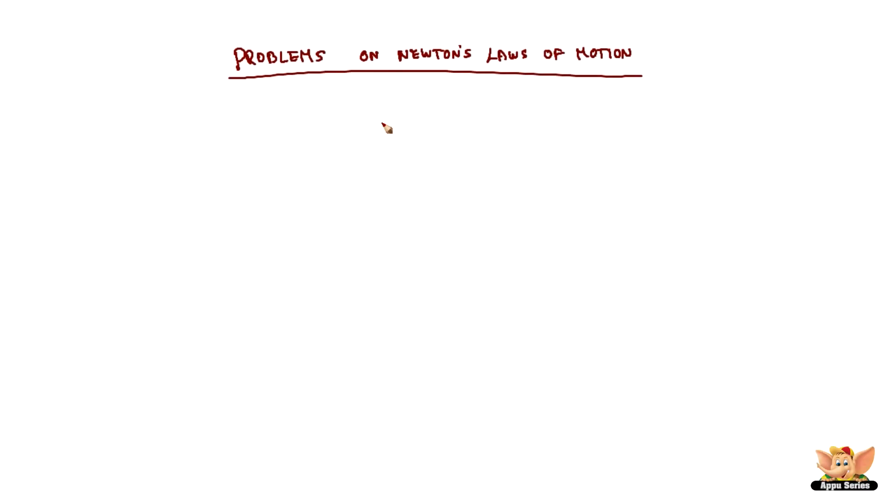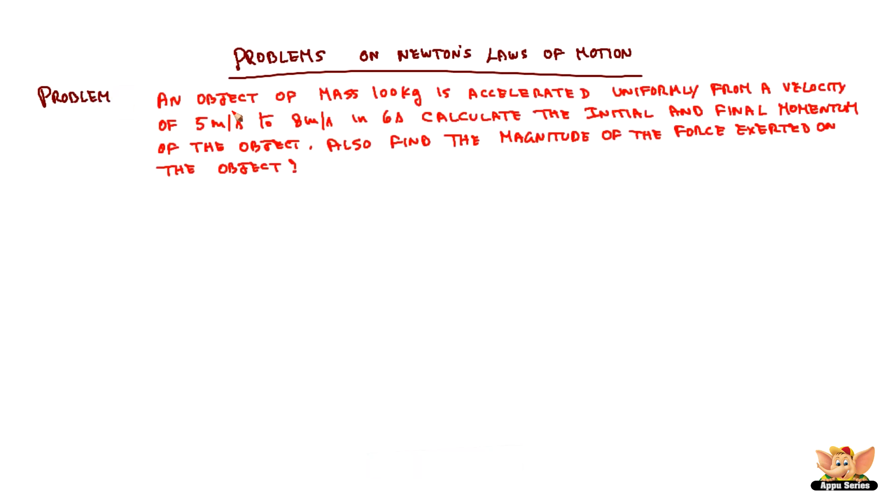Problems on Newton's Laws of Motion. An object of mass 100 kg is accelerated uniformly from a velocity of 5 m per second to 8 m per second in 6 seconds. Calculate the initial and final momentum of the object. Also, find the magnitude of the force exerted on the object.